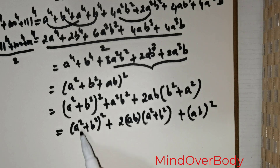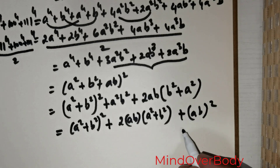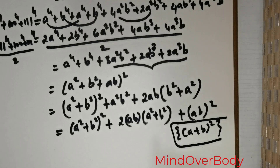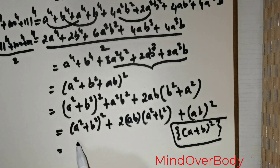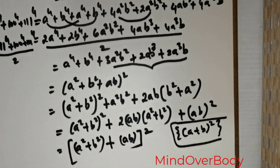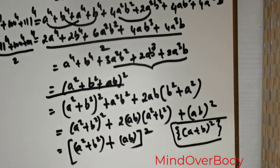Clearly you can see this is (A squared positive B squared) squared, plus 2 times AB times (A squared positive B squared), plus (AB) squared. This is of the form (X positive Y) raised to the power 2. In other words, this entire thing can be rewritten as (A squared positive B squared positive AB) raised to the power 2. That is the simplest thing I wish to convey here.